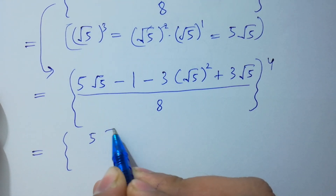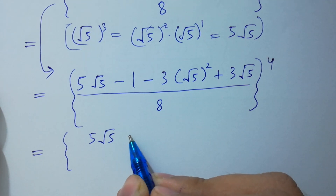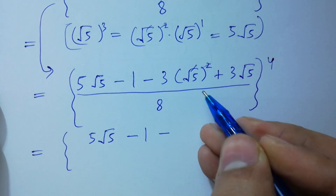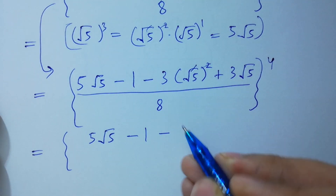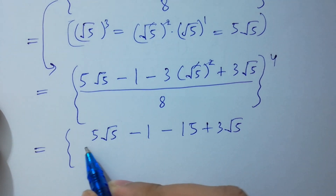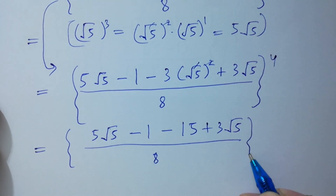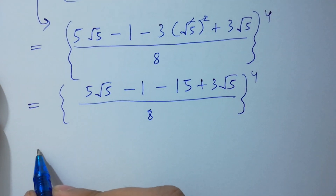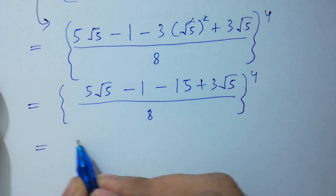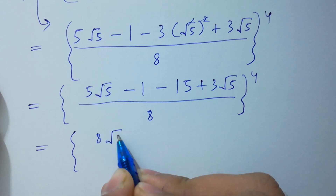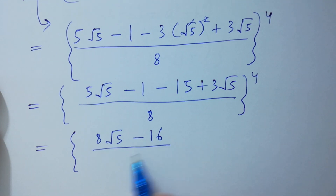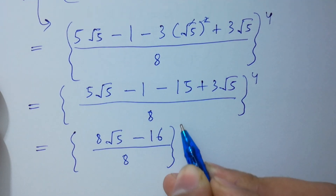Collecting like terms: 5·square root of 5 plus 3·square root of 5 equals 8·square root of 5. And minus 1 minus 15 equals minus 16. So we have (8·square root of 5 minus 16) over 8, to the whole power 4.